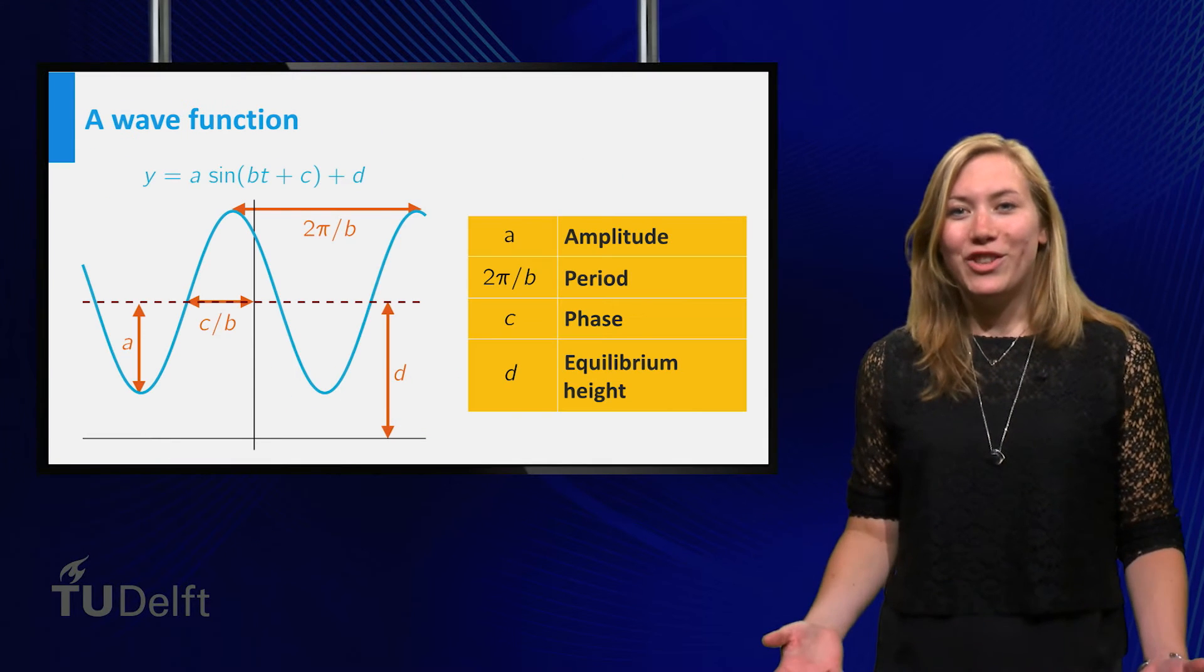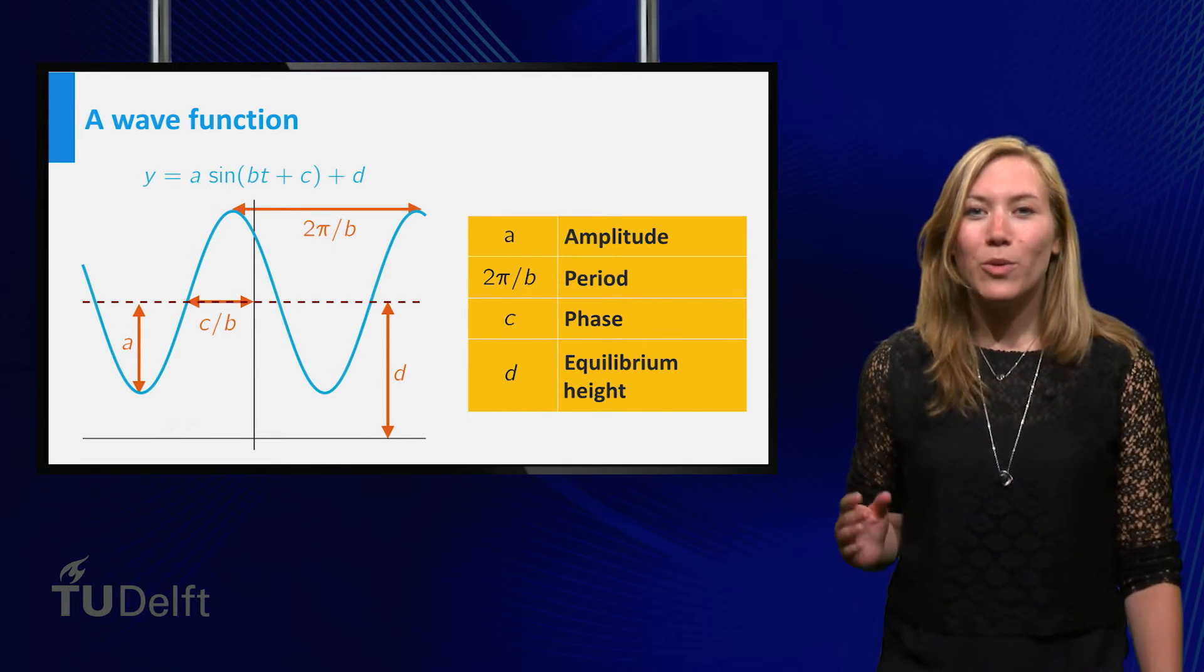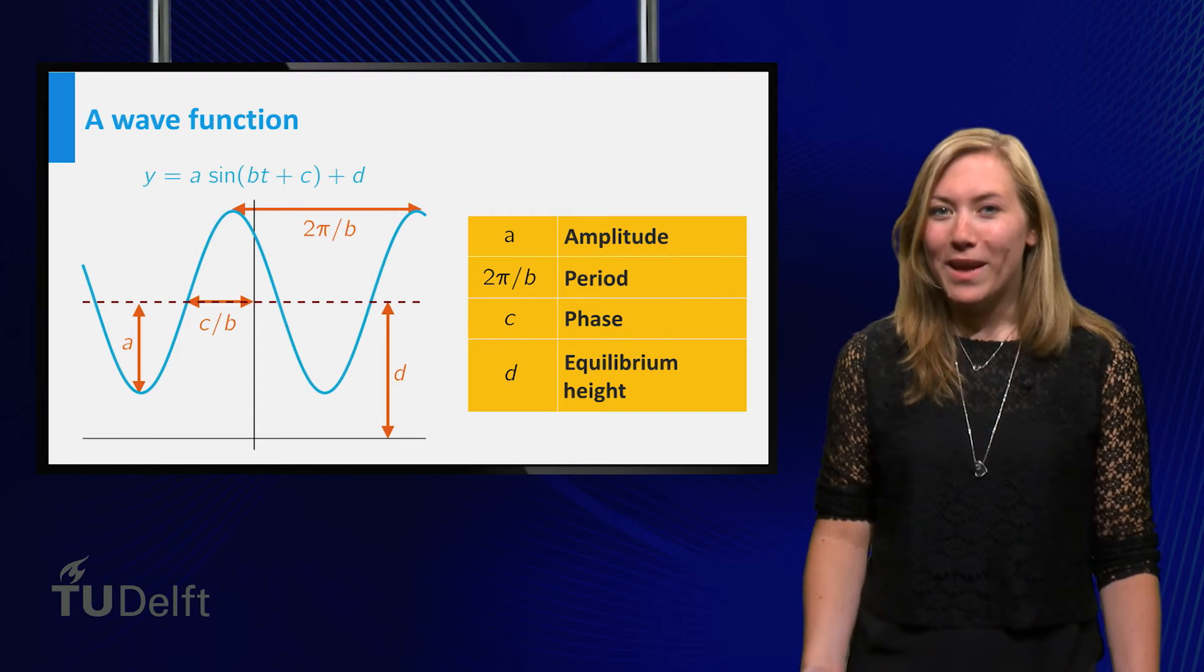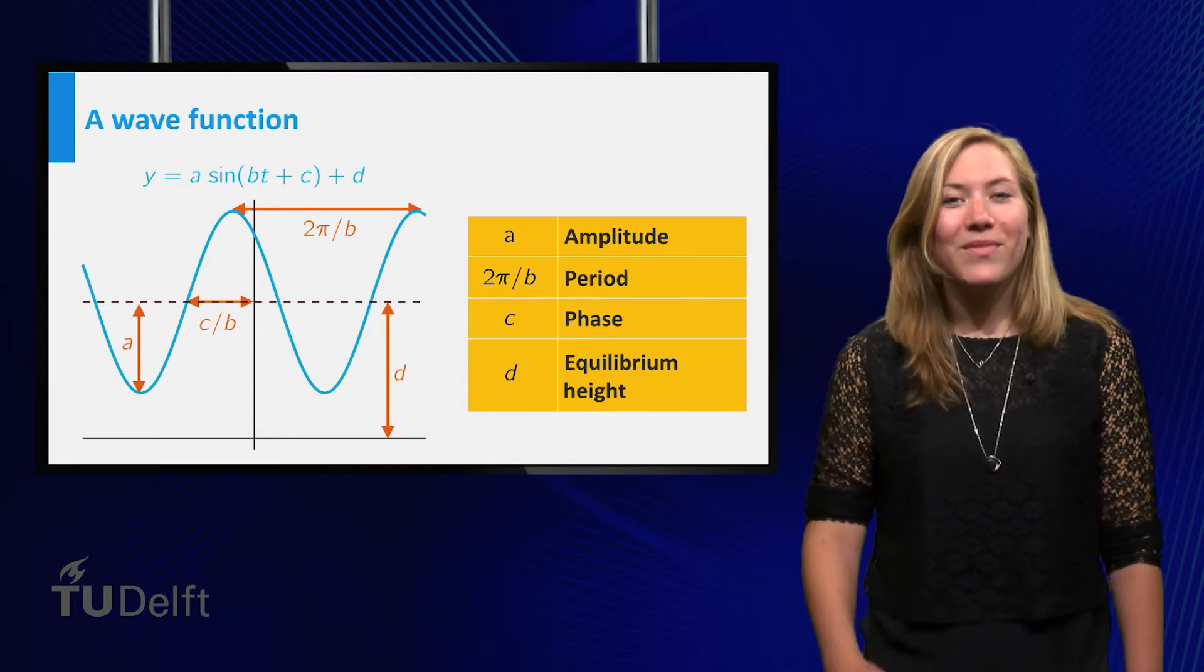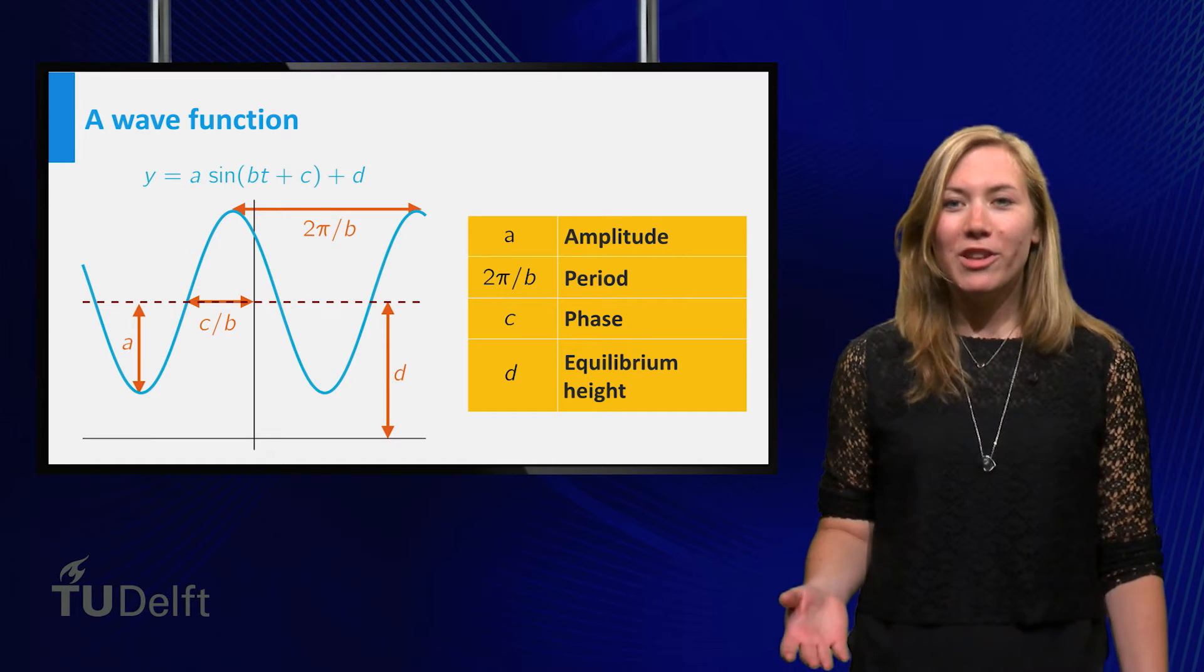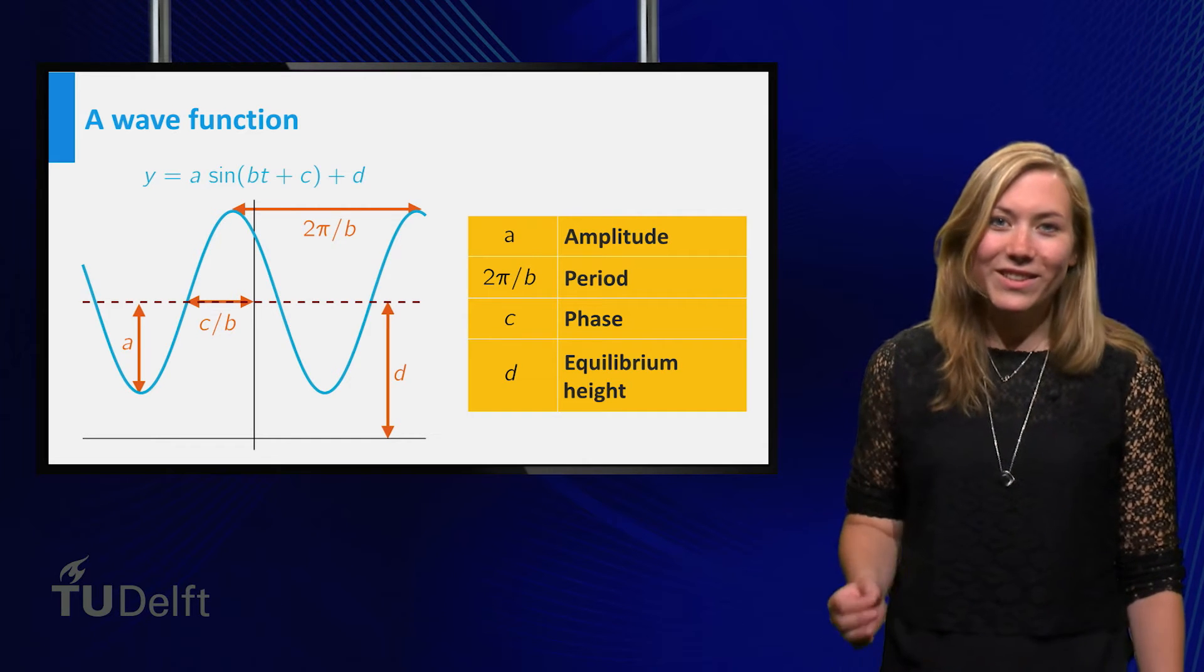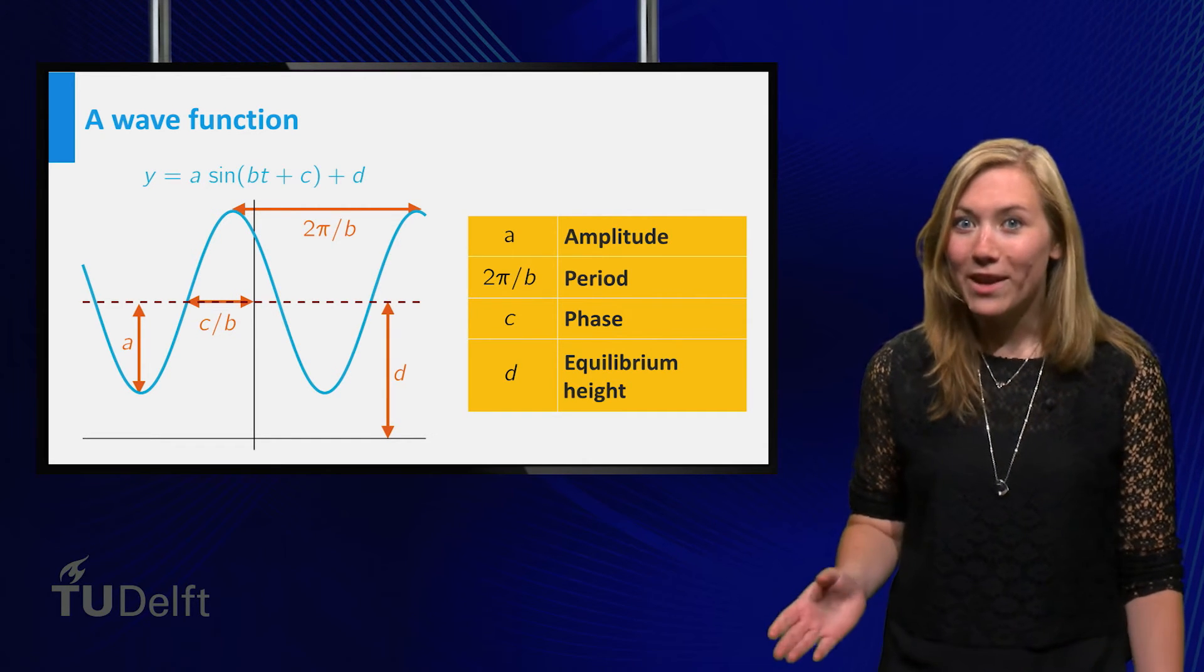The compositions of a sine function with linear functions typically describe waves. Four important aspects of a wave are its amplitude, the distance between the equilibrium position and extremal values. The period, the distance between two consecutive maxima.